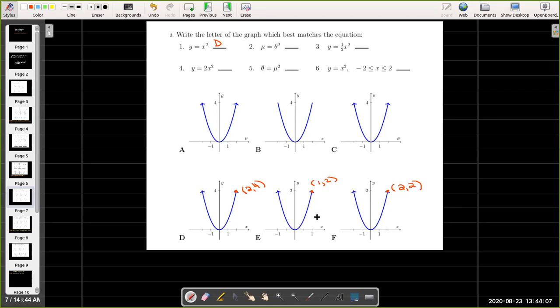Graph E has the point 1 comma 2, and that point satisfies only one equation. That would be equation 4, when x equals 1, y will equal 2.